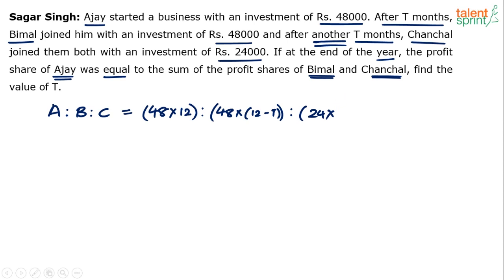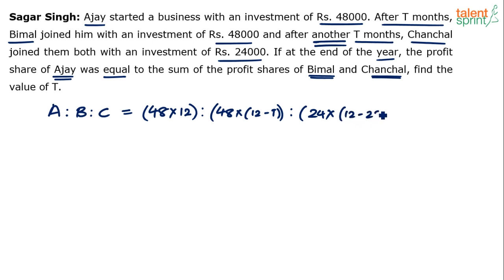Chanchal joined after another T months. Already T months had passed when Bimal joined, and then after another T months Chanchal joined — so Chanchal lost two T months in total. Therefore, Chanchal was in the business only for 12 minus 2T months. Her investment of 24,000 was in use for only 12 minus 2T months.